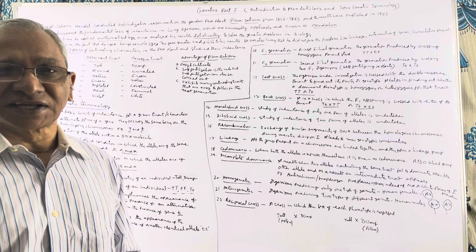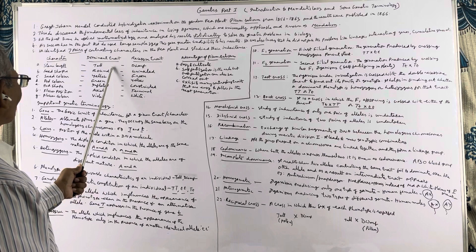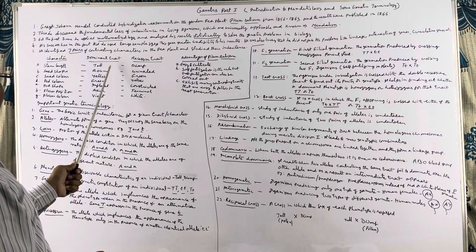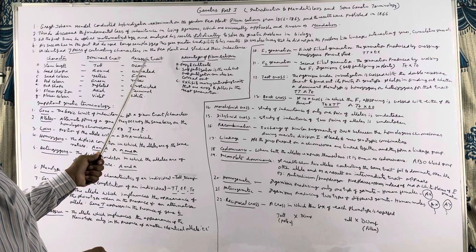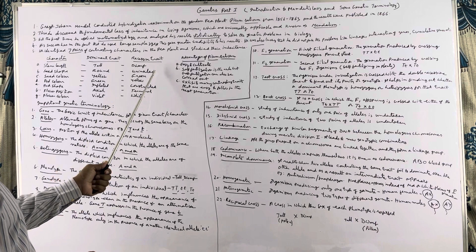You must listen carefully. The first list of traits — tallness, round shape, yellow seed color, green pod color, inflated pod, axial flower position, and violet flower color — are known as dominant characters or dominant traits. The second list — dwarfness, wrinkled shape, etc. — are recessive traits. Tallness is a dominant trait and dwarfness is a recessive trait. Similarly, round shape is dominant and wrinkled shape is recessive.